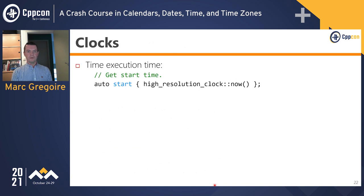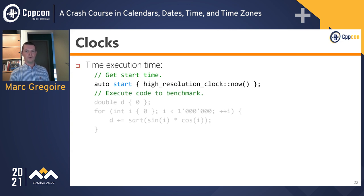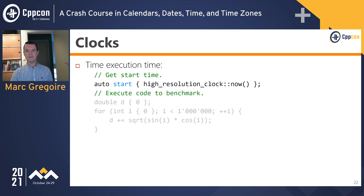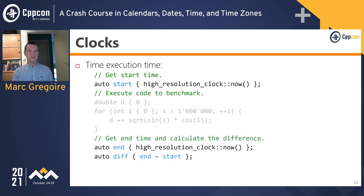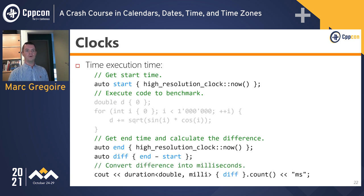Clocks can be used to time a piece of code. To benchmark, you use high_resolution_clock: first get the current time, execute the code you want to benchmark (making sure it takes measurable time), then retrieve the clock time again and calculate the difference. You can convert this difference to milliseconds using the predefined SI alias, giving you the execution time of that code.